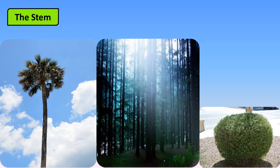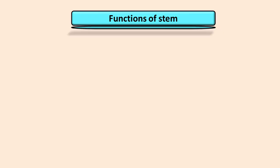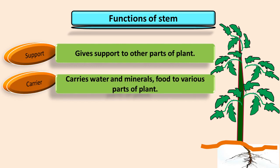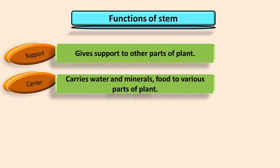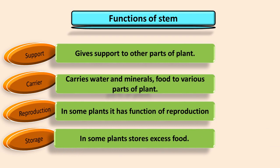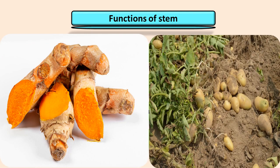Now let's study the functions of stem. The stem gives support to other parts of the plant. Stem carries water and minerals from root to other parts of the plant. It also carries out the function of production and conduction of food. The next function is reproduction — in some plants, the stem has the function of reproduction. Next is storage — in some plants, the stem carries the function of storage. The underground part of the stem is used to store excess food, for example, turmeric and potato.